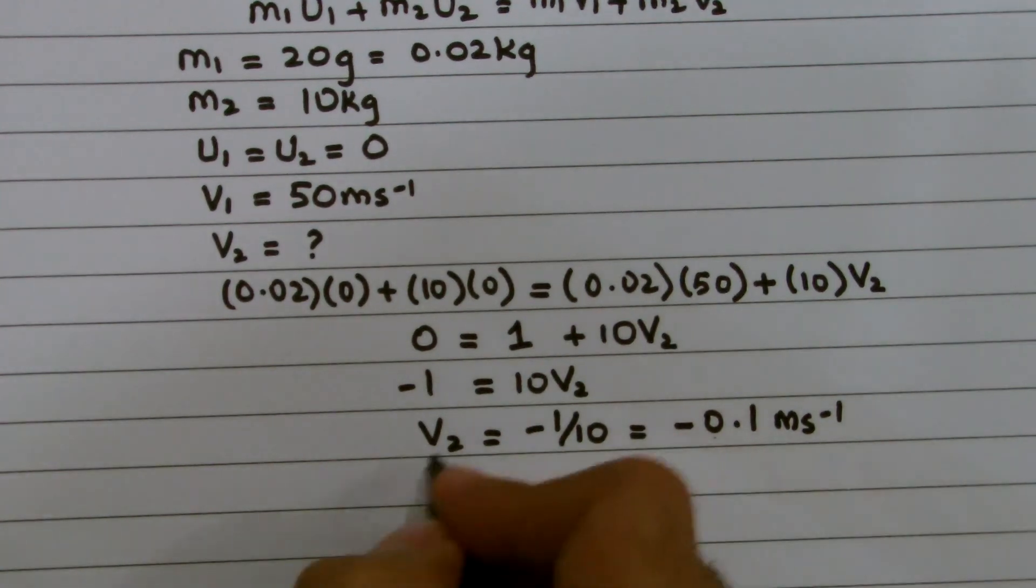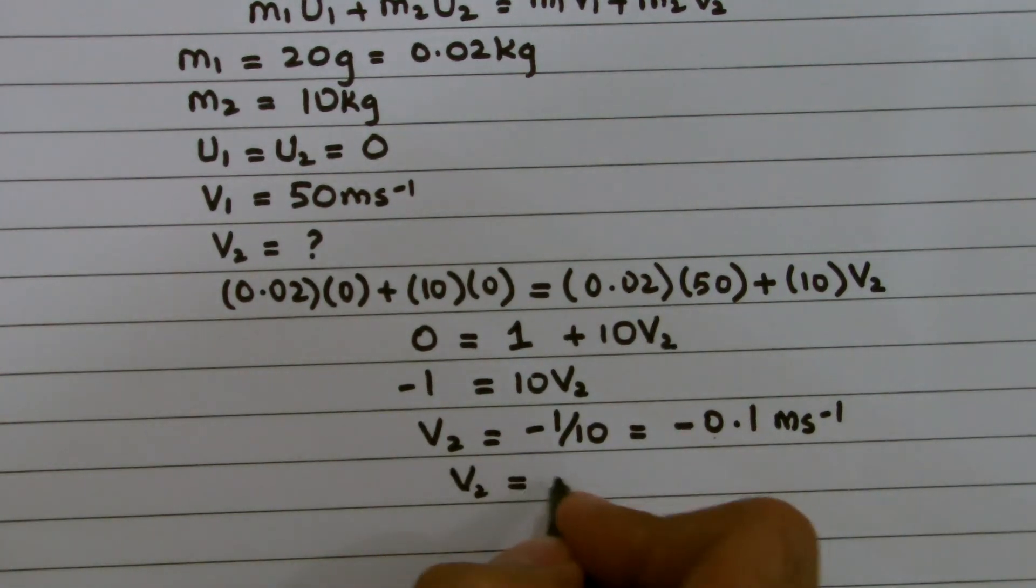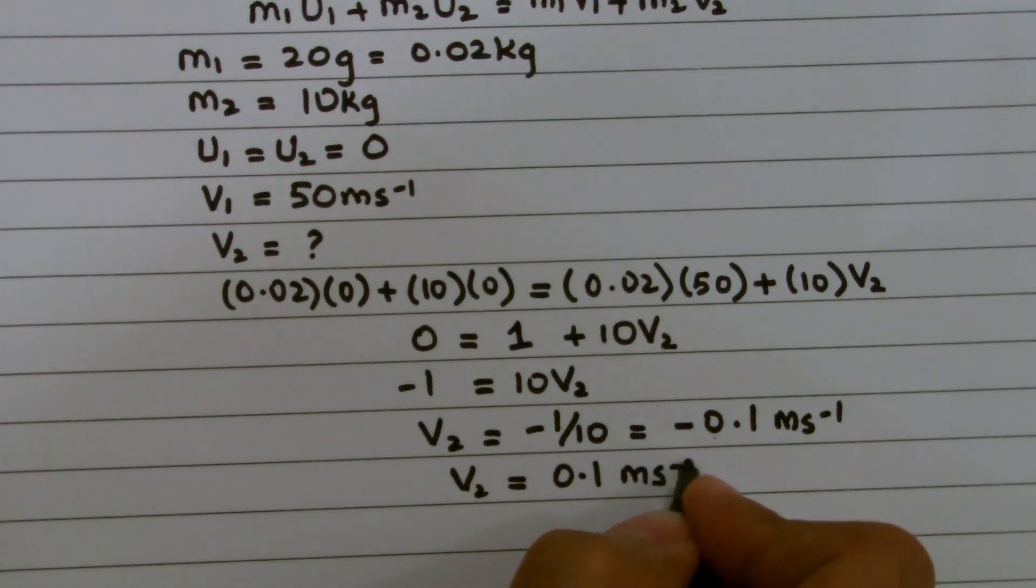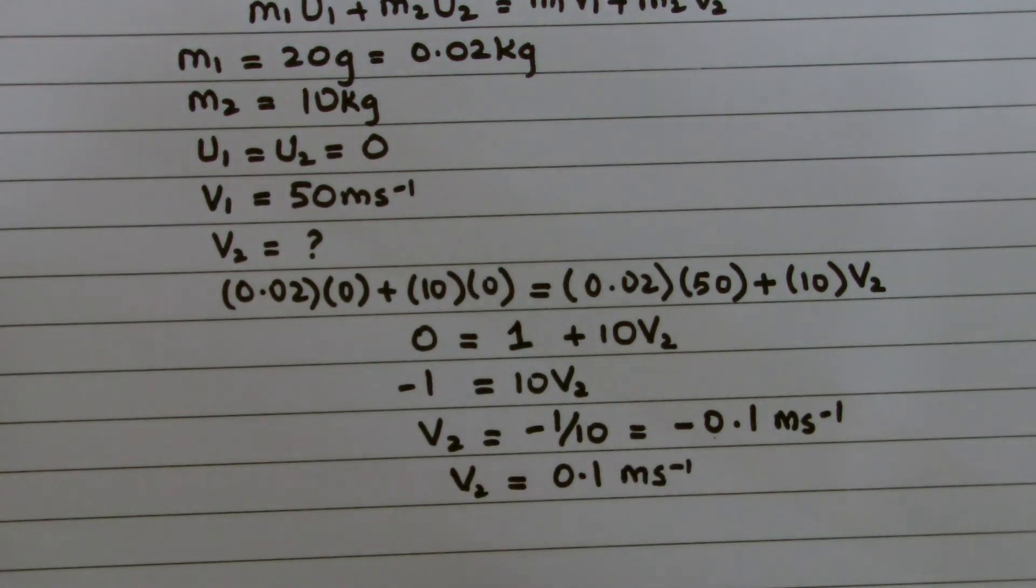This negative sign particularly expresses or shows the recoil of the gun. So the recoil by magnitude is 0.1 meters per second and as I said, negative sign reflects the recoil.